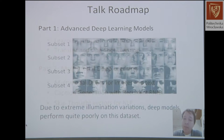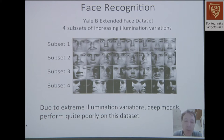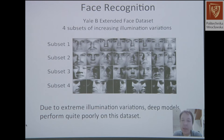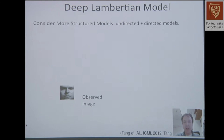Let's look at one particular example: the Yale-B extended face dataset. You have different lighting conditions, and due to extreme illuminations, these models very often perform quite poorly on this dataset. Recently there was a paper from Google showing that standard neural nets can actually solve this problem provided you have millions of data. But let's look at that particular dataset where we don't have a lot of data.